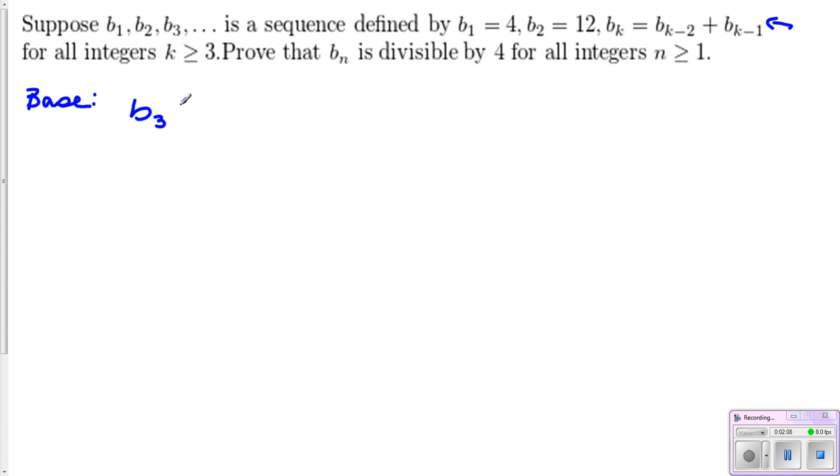Now, according to this formula, B₃ is equal to B_{k-2} makes that 1 plus B_{k-1} makes that 2. And in our startup here, they gave us B₁ and B₂. So those values are 4 plus 12, which gives us 16.